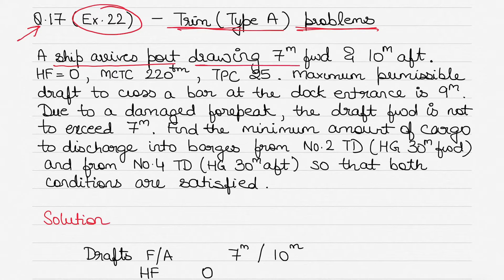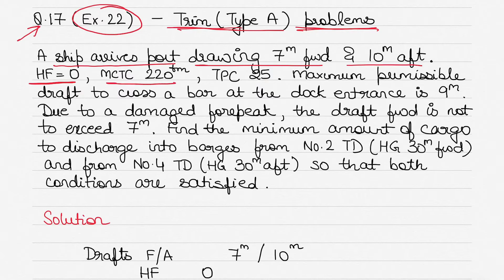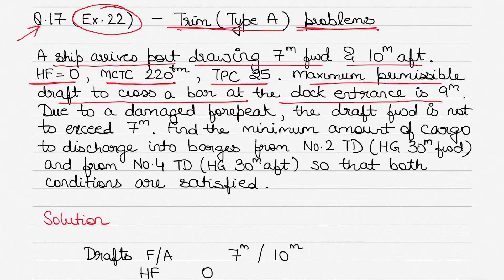The question says there is a ship that arrives at port drawing 7 meters forward and 10 meters aft. HF is 0, meaning the distance from midship to the center of flotation is 0. MCTC is 220, TPC is 25. The maximum permissible draft to cross a bar at the dock entrance is 9 meters.